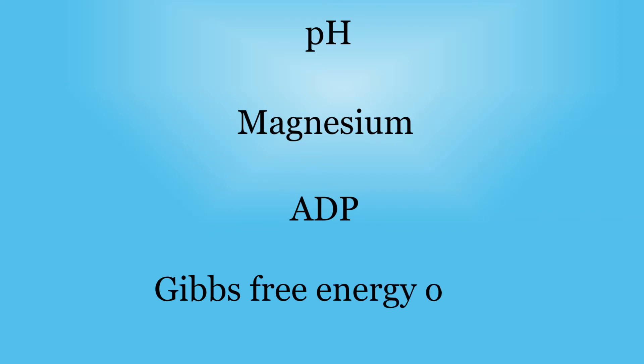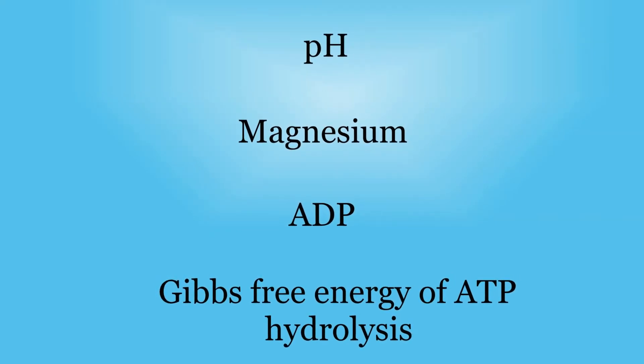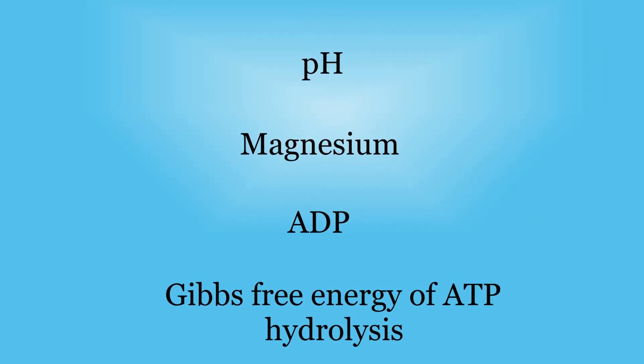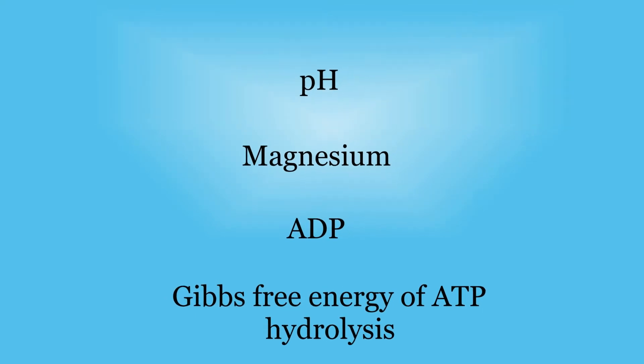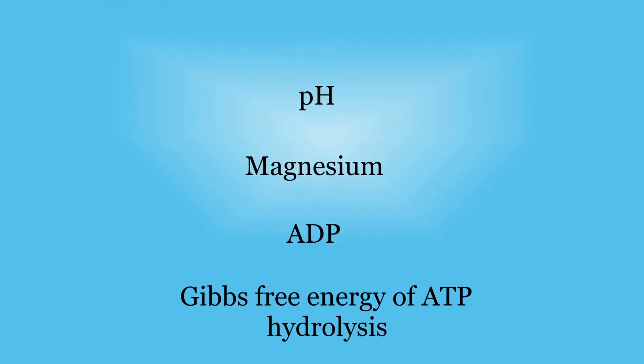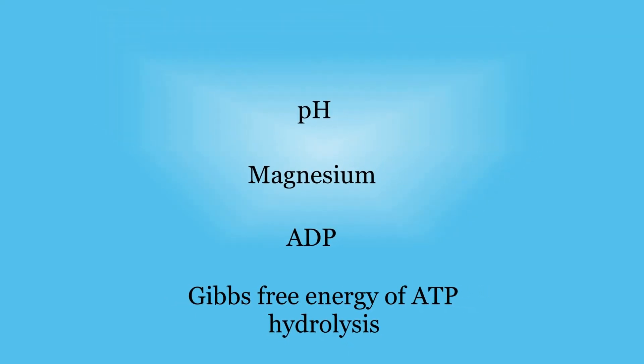This technique also allows calculation of pH, intracellular magnesium concentration, ADP concentration and Gibbs-free energy of ATP hydrolysis, which are all useful measures we calculated to be able to have a comprehensive picture of the energy status in amyotrophic lateral sclerosis.